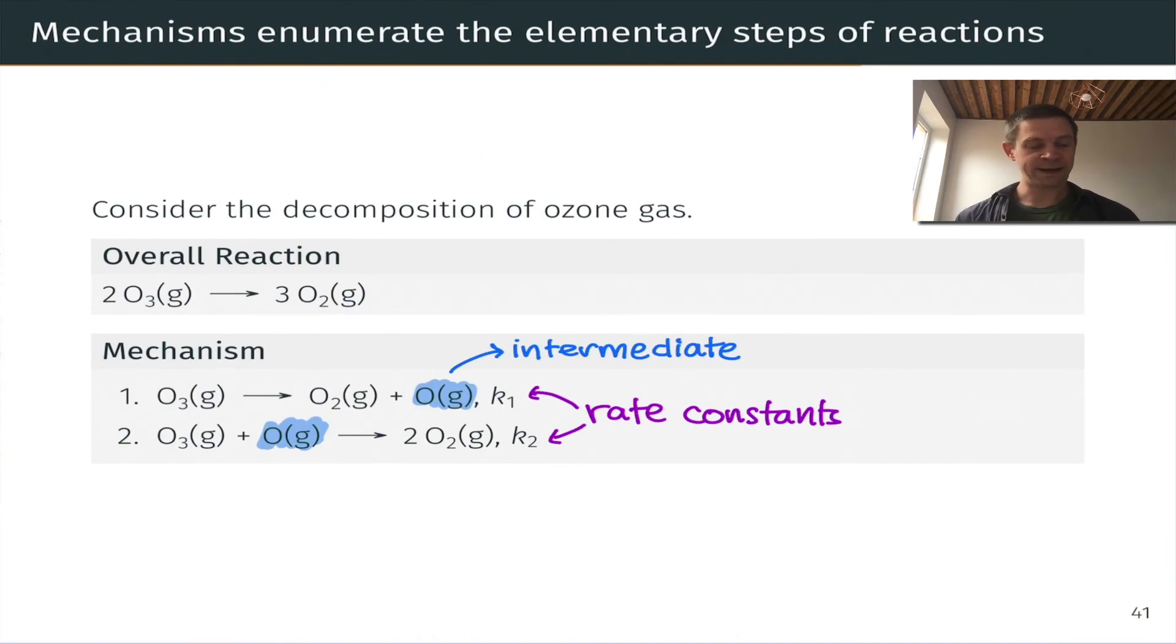For example, if we were turned back to the reaction of ozone, decomposition of ozone, in the overall reaction, the coefficient on O3 is 2. But notice that in each of the individual elementary steps, only one O3 molecule appears on the reactant side.